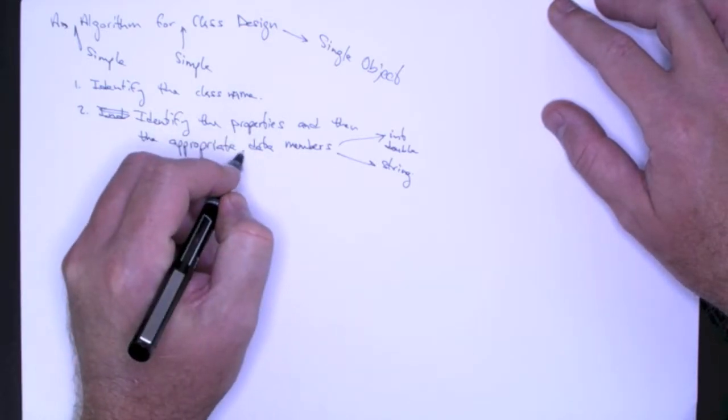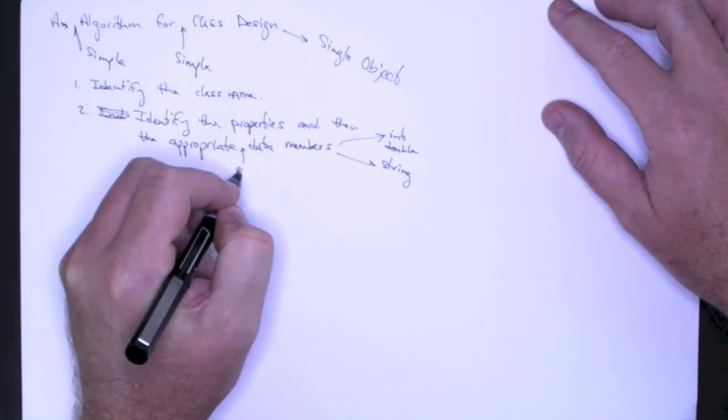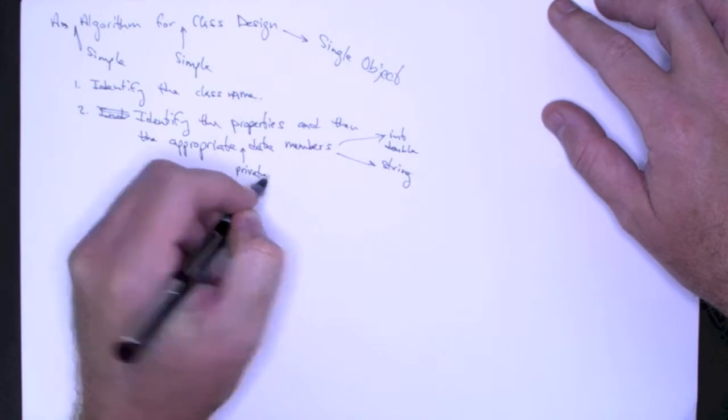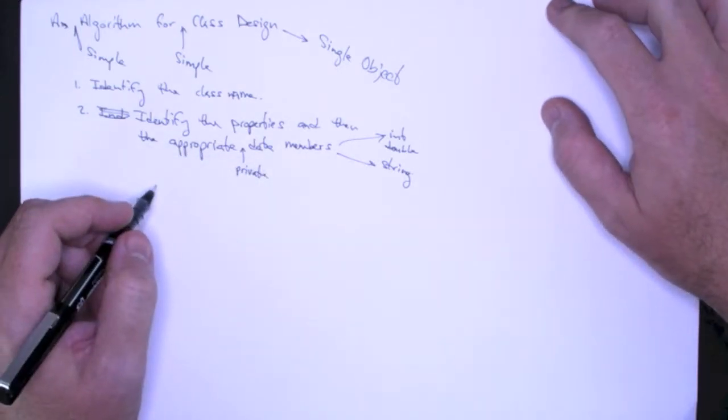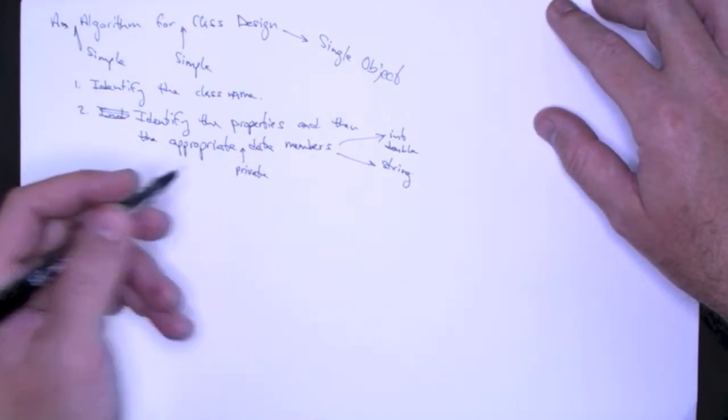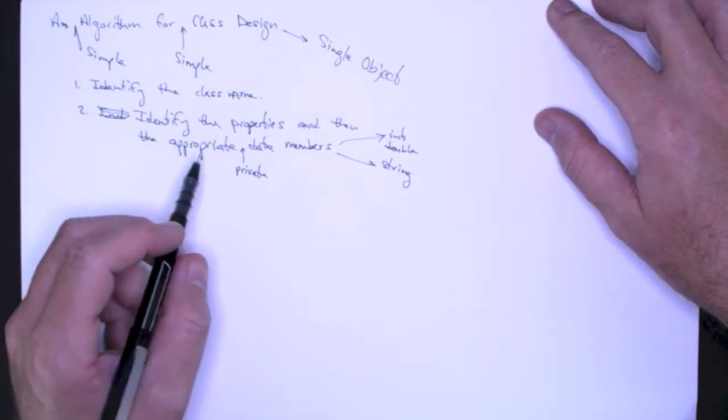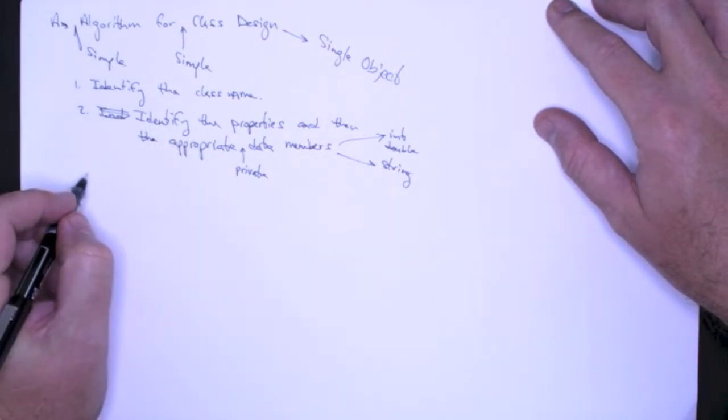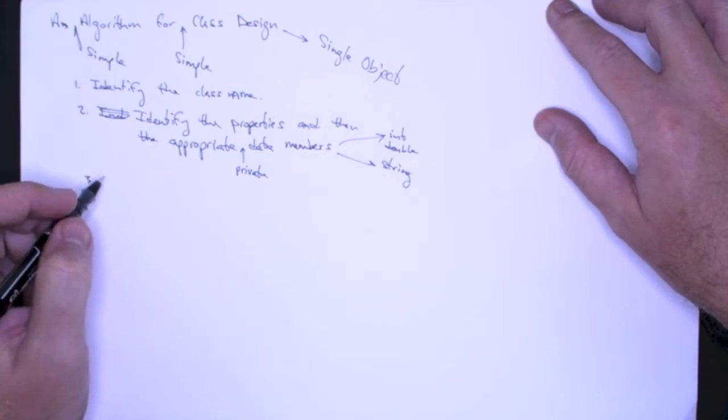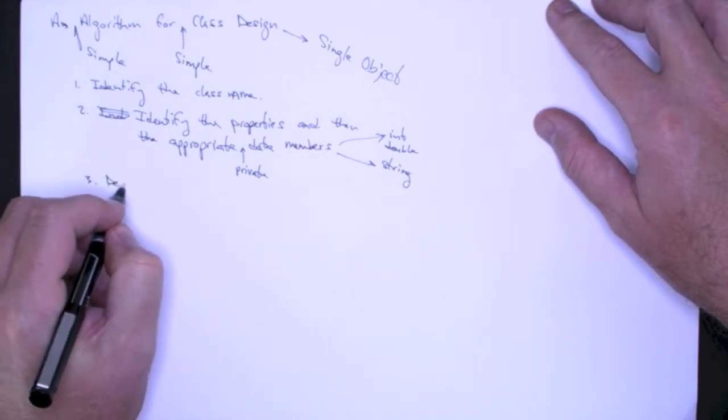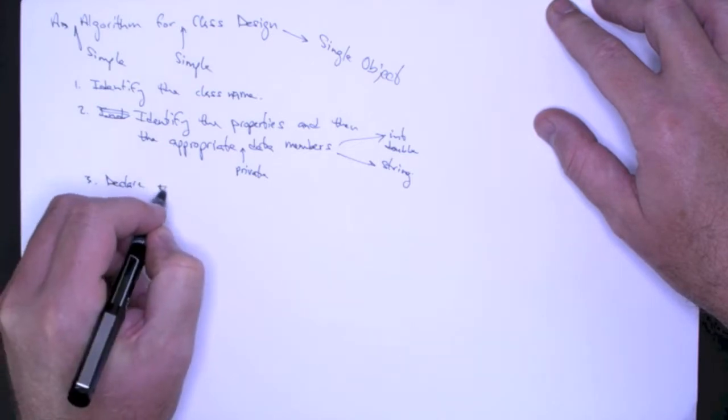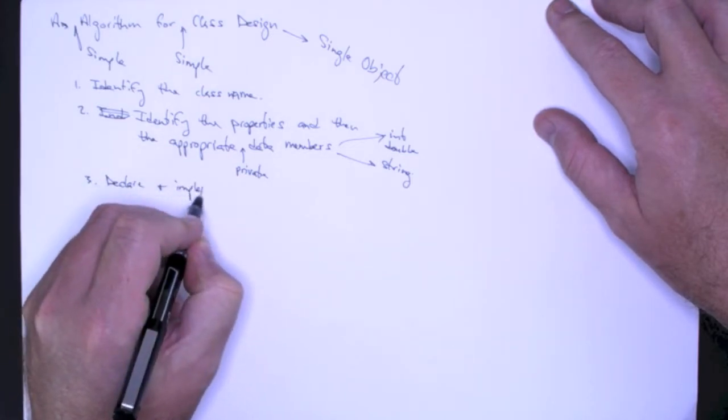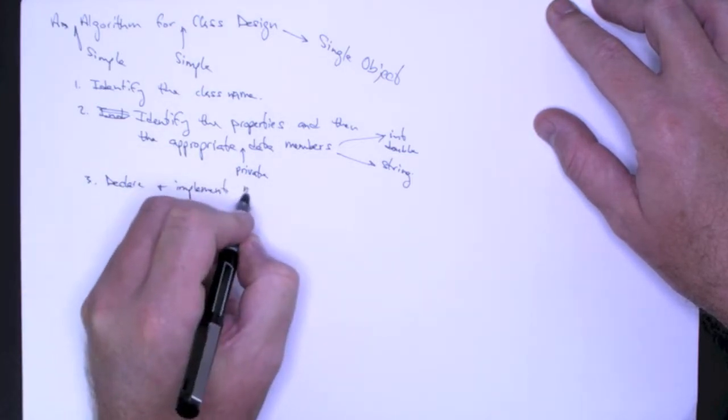And of course, these should be private. Always make your data members private. So once you've identified the properties of the class, then what you can do is start defining the methods. So you can declare and implement your methods.